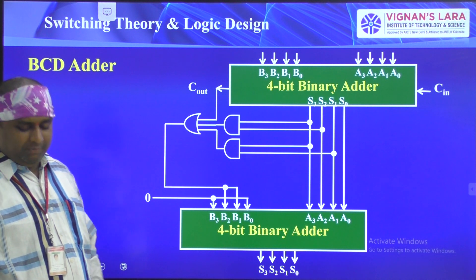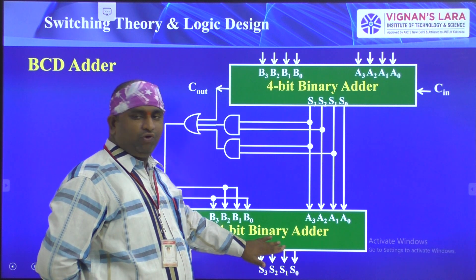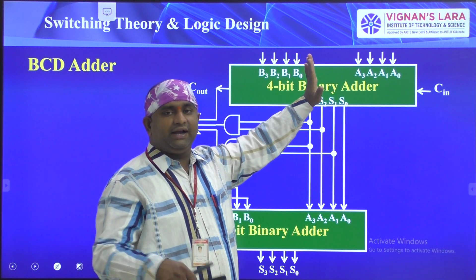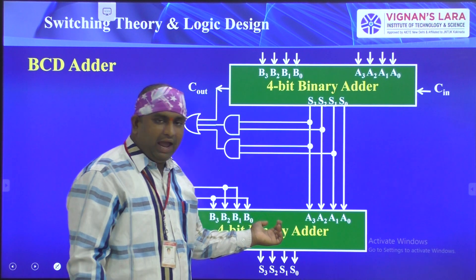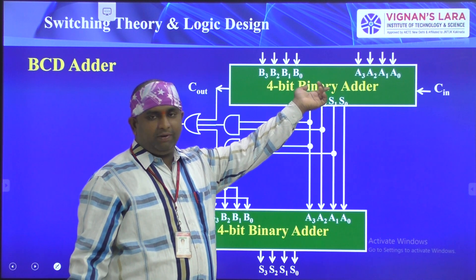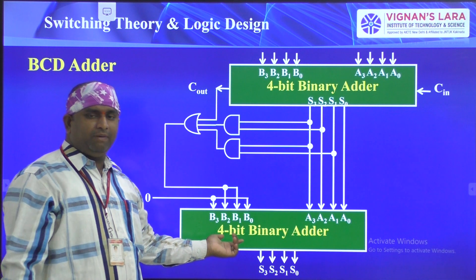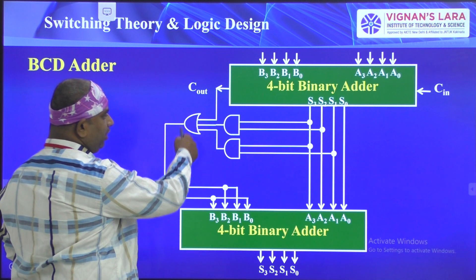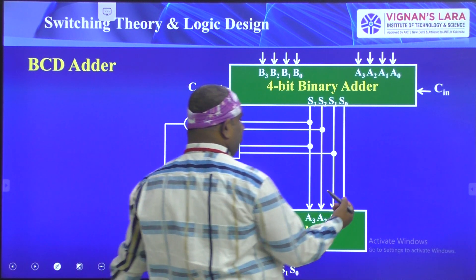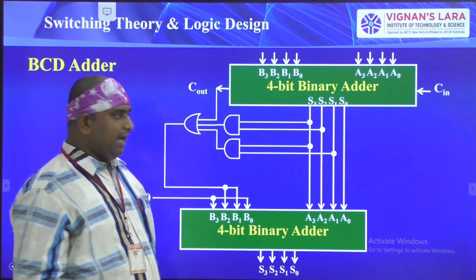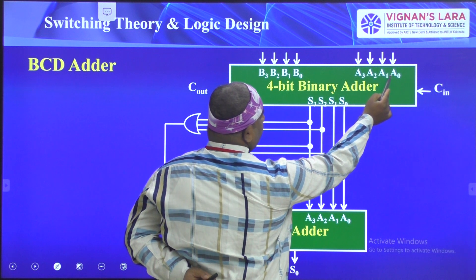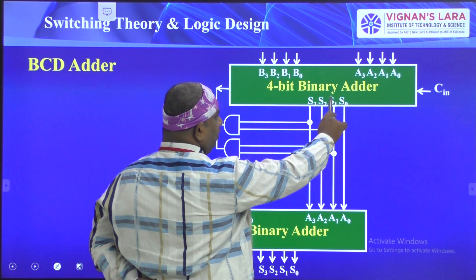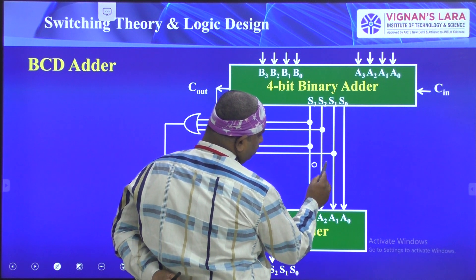The BCD adder uses two four-bit binary adders. The first adder takes the original A and B values. If the sum is greater than nine or there is a carry, six must be added using the second adder. The second four-bit binary adder is also a normal binary adder. Together, both adders form the complete BCD adder circuit.